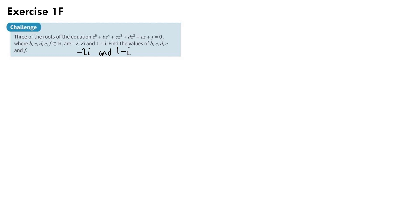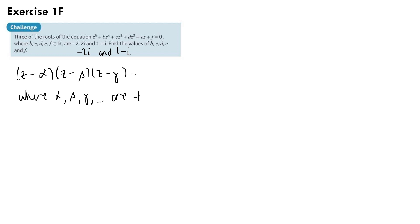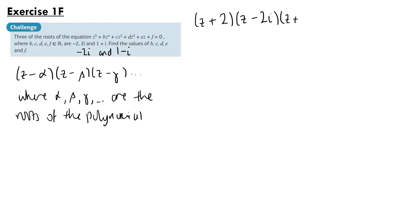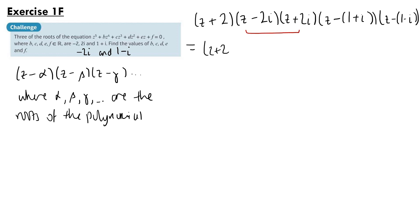We can write the quintic equation as a product of five factors in the form (z minus alpha)(z minus beta)(z minus gamma) and so on, where alpha, beta, gamma and so on are the roots. So we write it as (z plus 2)(z minus 2i)(z plus 2i)(z minus 1 plus i)(z minus 1 minus i). For the middle two factors we have a difference of two squares: z squared minus (2i) squared, which is z squared plus 4.